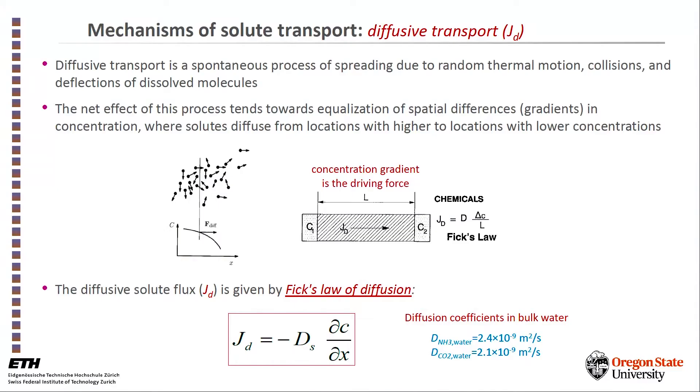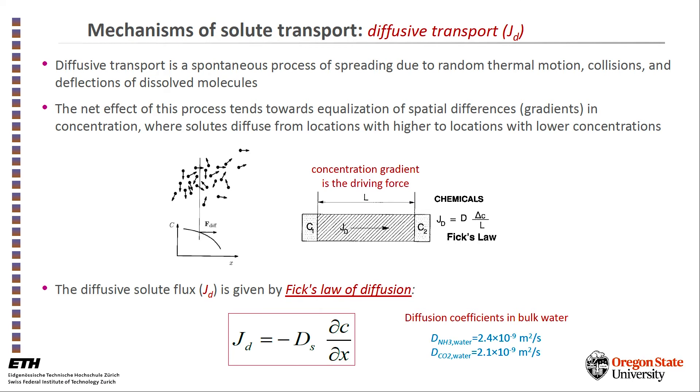Fick's law, if you remember, will basically state that the flux of solutes by diffusion, J_d, would simply be the diffusion coefficient times the gradient of the concentration in space. We have a product of a gradient times the coefficient to characterize this transport. I listed here two values of diffusion coefficient for solutes in bulk water. Of course in soil the diffusion will be different as we have seen in a previous presentation.